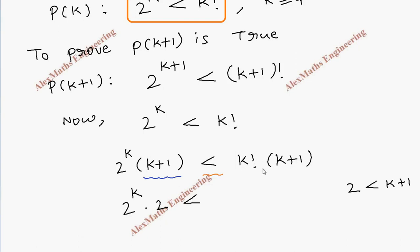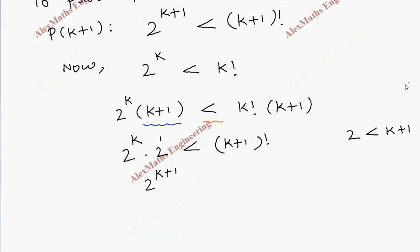Less than, and k factorial into k+1 becomes (k+1) factorial. So finally this is 2^k, this is power 1, so we add the powers when the bases are same. 2^(k+1) is less than (k+1) factorial.